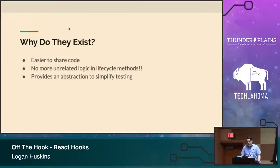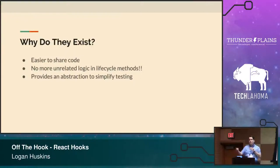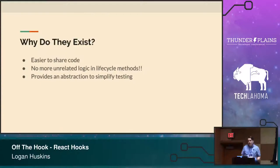So why do React hooks exist? React hooks exist because they make our code easier to share around our application and with others. We no longer have unrelated logic in lifecycle methods. If you've used React, you've seen componentDidMount doing 15 different unrelated things and componentWillUnmount doing a bunch of unrelated things. React hooks help us get out of that pattern. They also provide an abstraction that helps us simplify testing — when we pull this code out, we'll be able to test it by itself more easily.